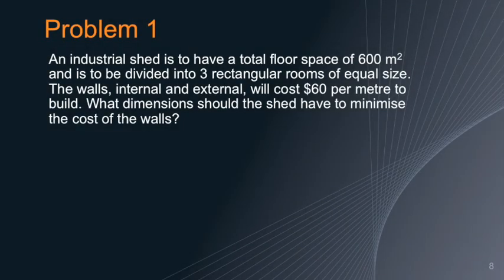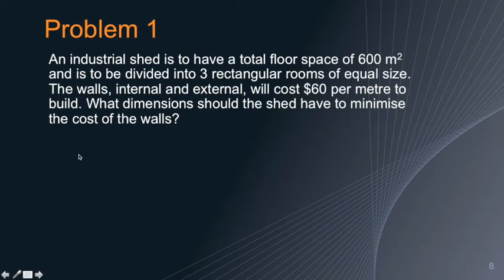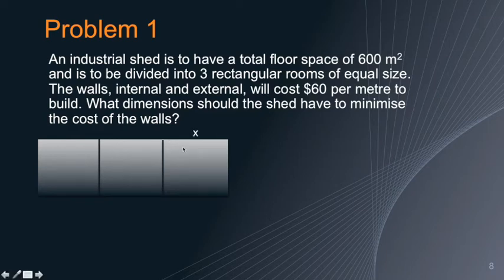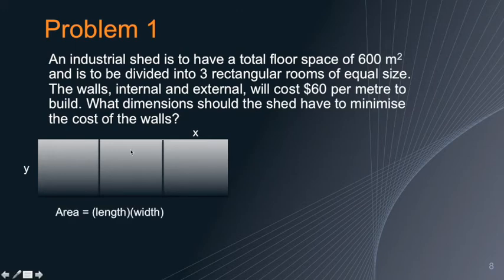Application problem: an industrial shed has a total floor space of 600 m² and is divided into three rectangular rooms of equal size. Walls (internal and external) cost $60 per meter. We need to find the dimensions that minimize wall cost. Let x be the width of one room and y the length. The area equation is 3x · y = 600.